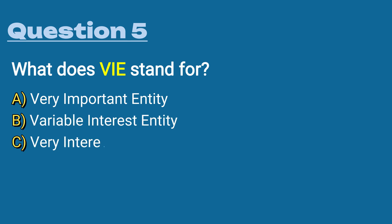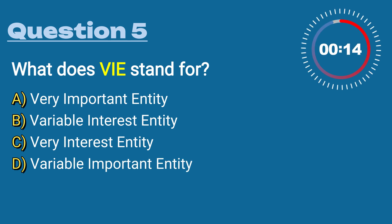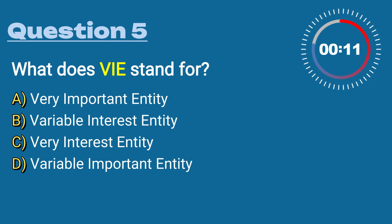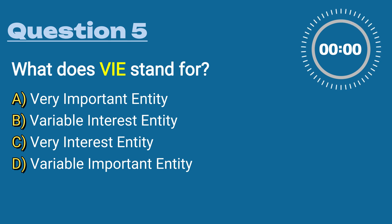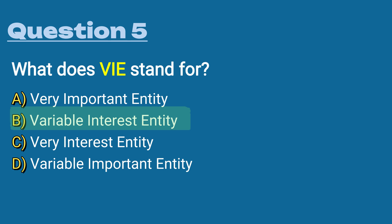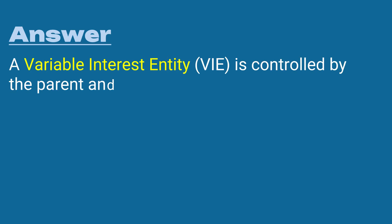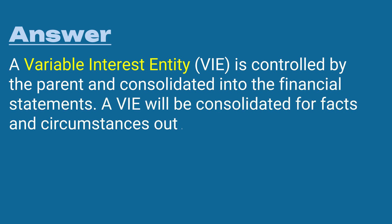A) very important entity, B) variable interest entity, C) very interest entity, or D) variable important entity. The answer is B) variable interest entity. A VIE is controlled by the parent and consolidated into the financial statements. A VIE doesn't necessarily look like it's controlled by the parent from an ownership perspective, but there are other facts and circumstances outside of ownership that make this entity consolidate into the financial statements.